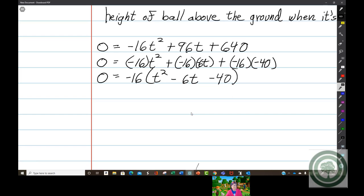Negative 16 is just a number. It does not have a variable with it. So since this is an equation, I can divide it out because it's just in the way. So 0 equals t squared minus 6t minus 40.